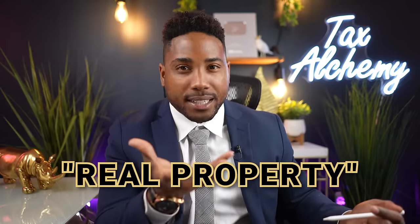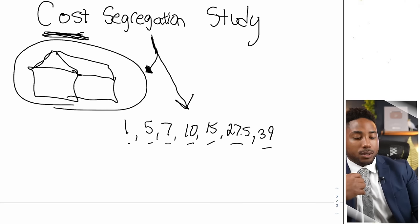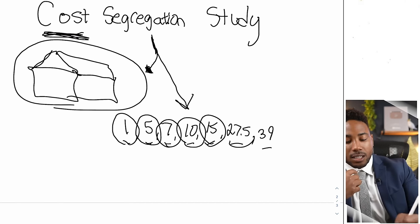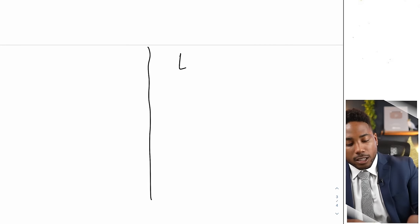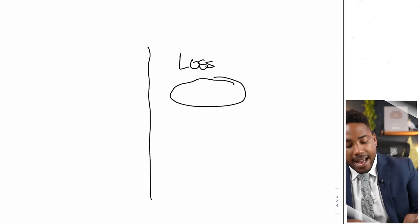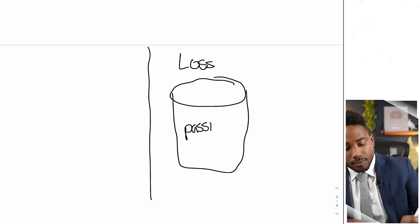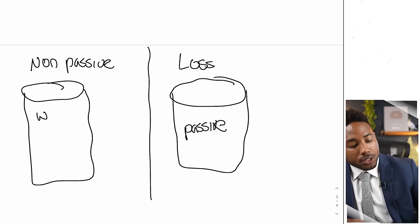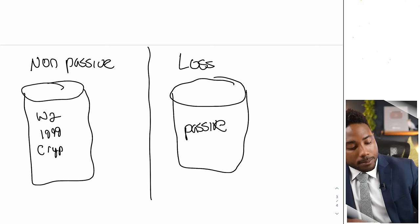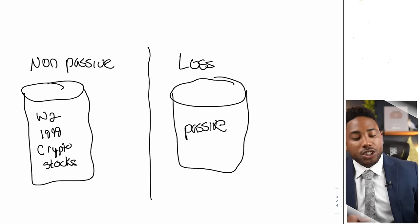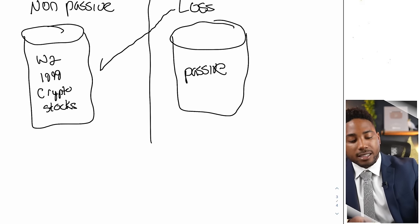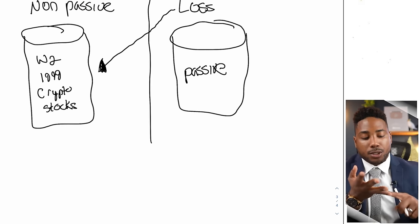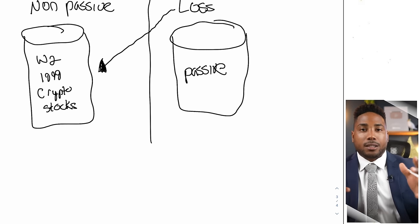All of this real property can now be reallocated into 1, 5, 7, 10, 15, 27.5, or 39-year buckets on the tax return — creating a loss inside your passive bucket. But on the non-passive side, you still have your W-2, 1099, crypto, and stocks. We're still in a situation where performing a cost segregation study does not allow us to use those losses to roll over and offset W-2, 1099, crypto, stocks, and all other income.